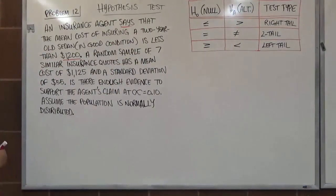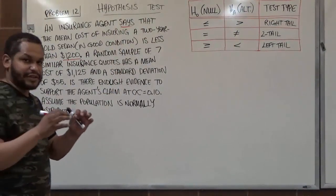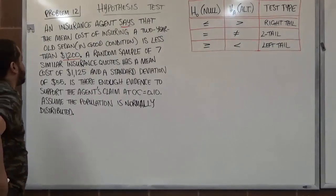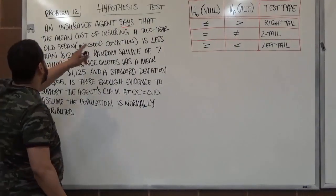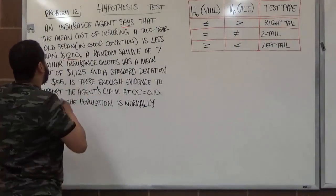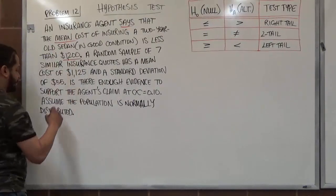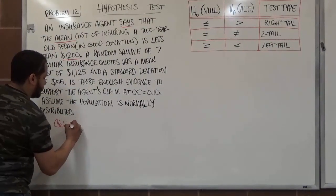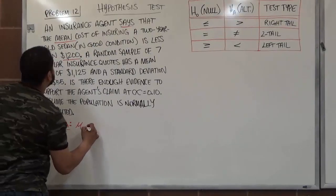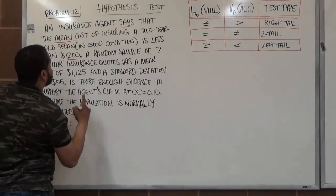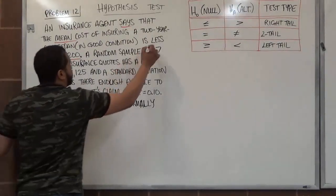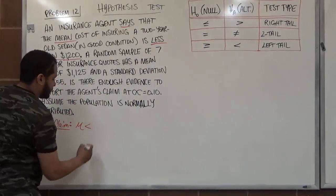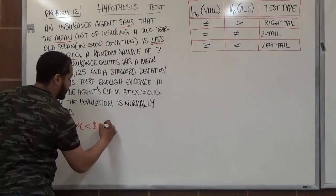The word 'says' indicates this is the claim. Most of the time claims use the word 'claim,' but here we look for what they're asserting about the mean cost. The claim states that the mean is less than $1,200 — the words 'less than' correspond to the less than symbol, giving us μ < $1,200.